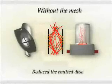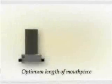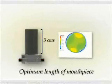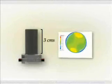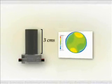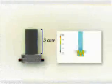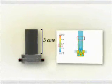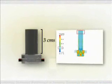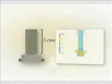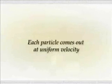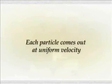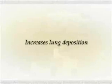The optimum length of the mouthpiece, which is 3 centimeters, creates a uniform exit velocity. As we have observed, there is a significant decrease from the chamber velocity to the entry velocity. But during the passage through the mouthpiece, there is a further reduction in the velocity, making it suitable for inhalation. Also, what is important is that each particle that comes out does so at a uniform velocity, thus increasing the lung deposition.